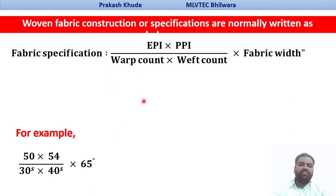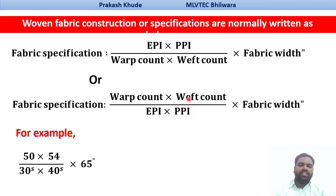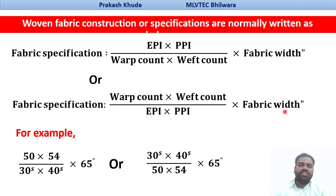Similarly, there is another way to mention the fabric specification where the warp count has been at the top, weft count below it, and at the bottom we have the ends per inch and picks per inch of that particular fabric, along with the fabric width. The same construction parameters are there but the way of writing the specification can be different.